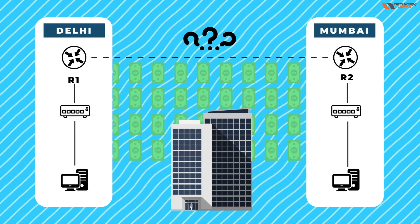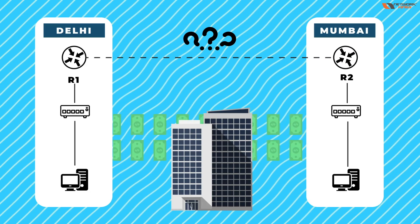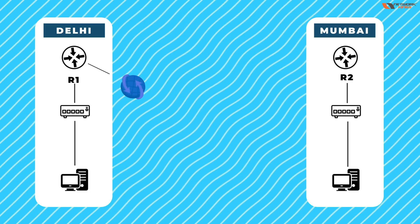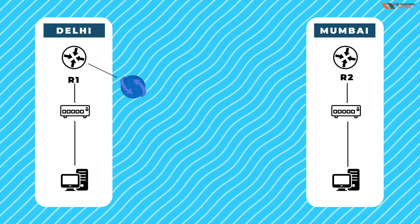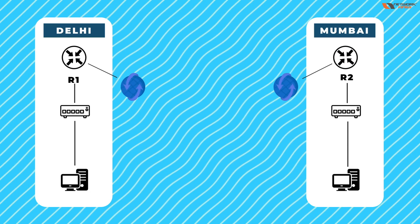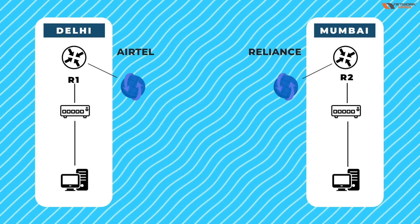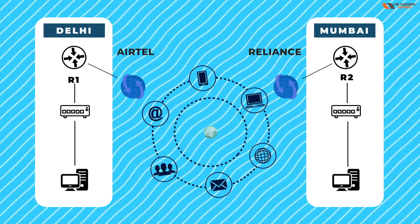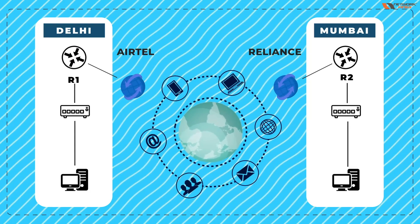Private connections are very costly, so there is a cheaper solution. In Delhi we get a normal internet connection, and in Mumbai we also get an internet connection — maybe one is Tata, maybe this one is Reliance — but we are connected to the internet on both sides.